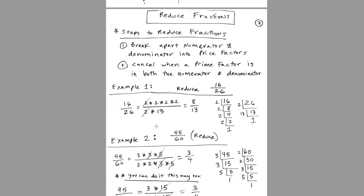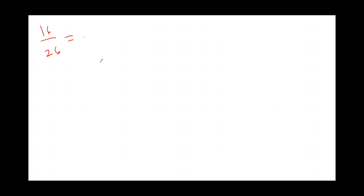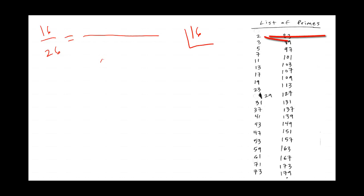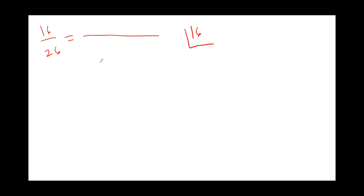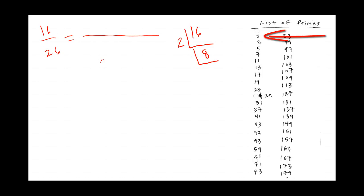Now let's do this by hand: 16 divided by 26. We need to list all prime factors for 16 and 26. Starting with 16, I draw a line and start with the first prime, 2. Does 2 go into 16? Yes, 8 times. I put a 2 there and write 8. Now another line — how many 2s are in 8? It divides evenly 4 times.